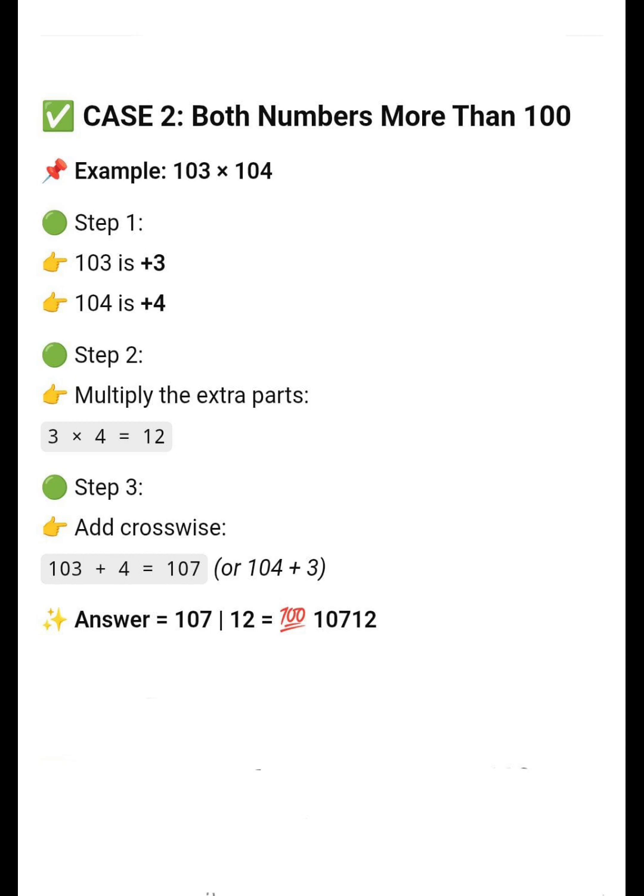Case 2, both numbers more than 100. Example, 103 x 104. So, here, plus 3 and plus 4. Take product, 12. Add crosswise, 103 plus 4 equal to 107.